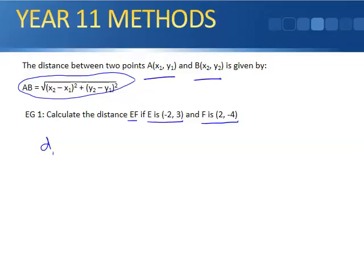So if we write the distance between E and F, we've got the rule. I won't write the rule, but I will label my points. So this is x₁, y₁, and this is x₂, y₂.